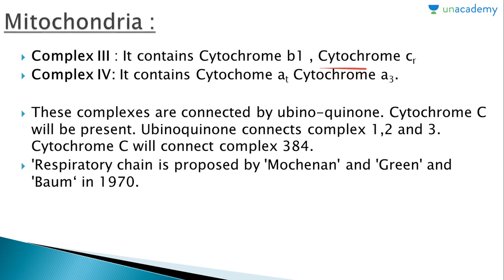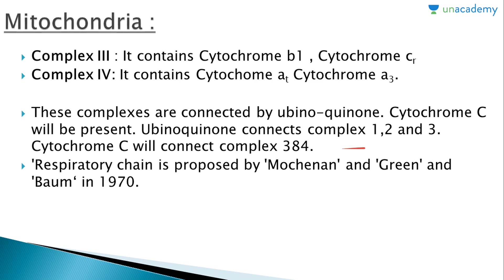The names can be difficult to remember at first, but writing them down and reviewing the lesson will help. Complex III contains cytochrome b1 and cytochrome c1. Complex IV contains cytochrome a1 and cytochrome a3. These complexes are connected by ubiquinone — ubiquinone connects complexes I, II, and III, while cytochrome c connects complexes III and IV. The respiratory chain was proposed by Moquinone, Green, and Bom in the 1970s.